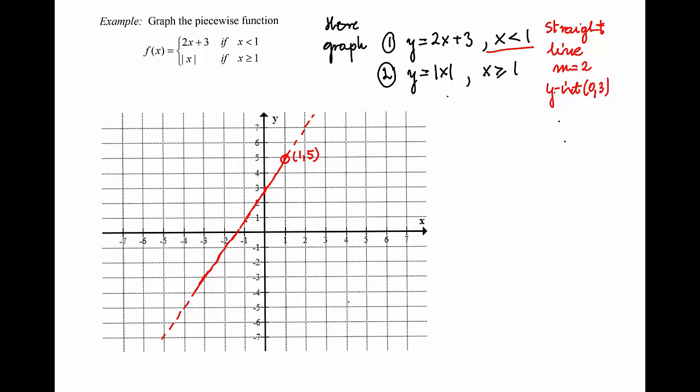Everything to the left of that point — the whole half-line — is going to be part of the graph of f(x). The part we are not using is for x greater than 1, so we take the eraser and erase that part.